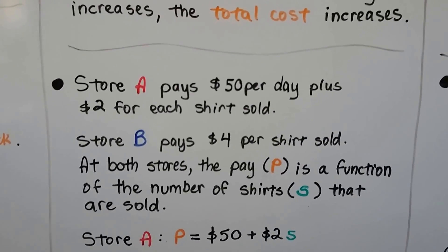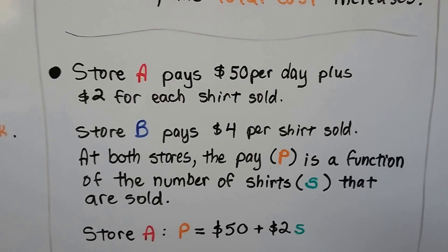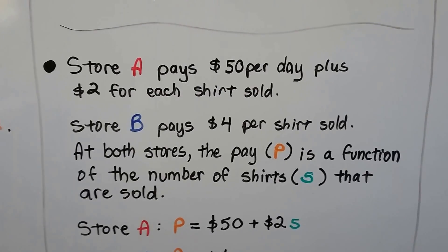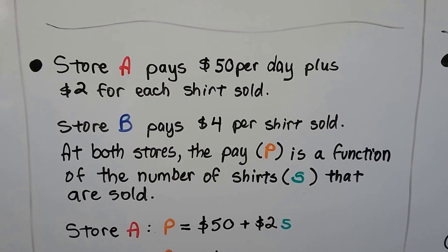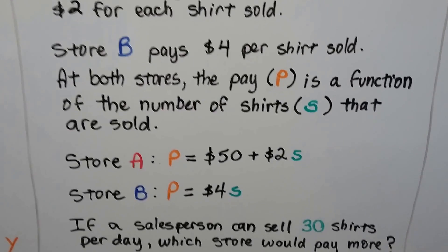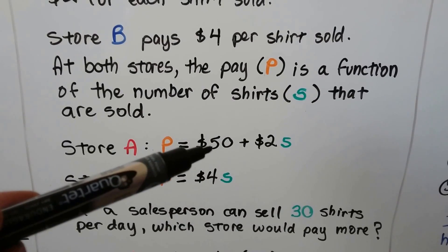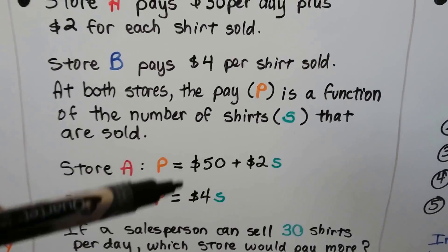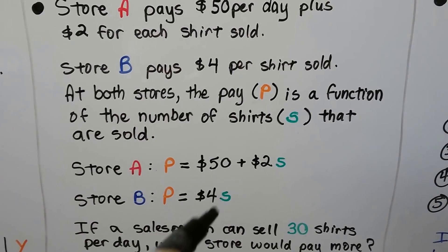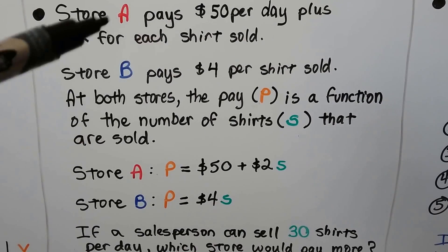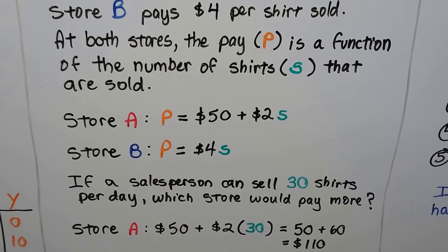Store A pays $50 per day plus $2 for each shirt sold. Store B pays $4 per shirt sold, so it doesn't have a daily pay. It just pays $4 per shirt. At both stores, the pay P is a function of the number of shirts, S, that are sold. At store A, the pay P is equal to the $50 per day plus $2 for every shirt sold. Store B, the pay is equal to just $4 per shirt sold.